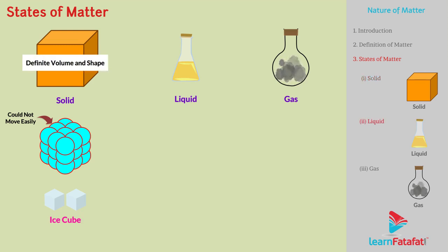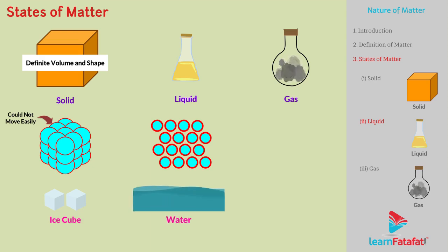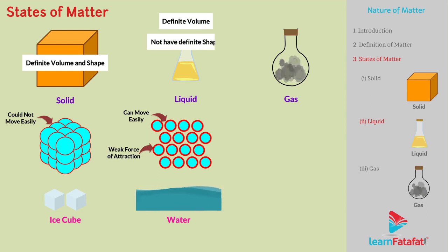If particles of matter are held close to each other but these can move freely, then the state of matter is liquid. For example, water. Since particles of matter can move, liquids have definite volume. However, due to weaker forces between particles, liquids do not have definite shape.